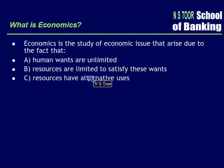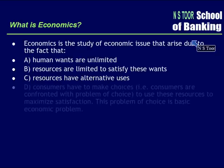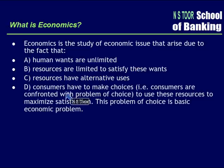Not only that, resources have alternative uses. Money can be spent on buying petrol, buying a car, or making payment of bills. So resources have alternative uses. In such circumstances, consumers have to make choices about where to spend these resources — consumers are confronted with the problem of choice.